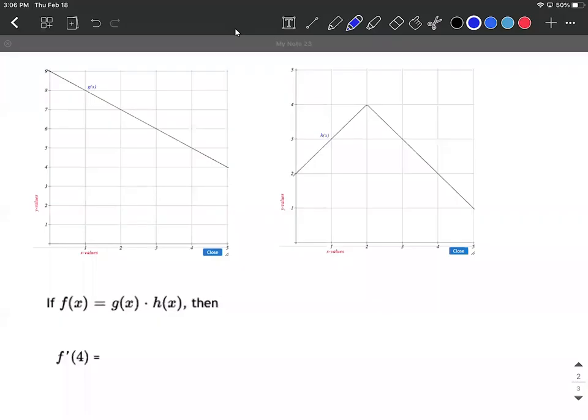On this problem, we've been given two functions: g of x, which is over here on the left-hand side, and h of x, which is over on the right-hand side. They've gone ahead and defined f of x - and you have to be careful about how f of x is defined - but it's g of x times h of x. So these are being multiplied together.